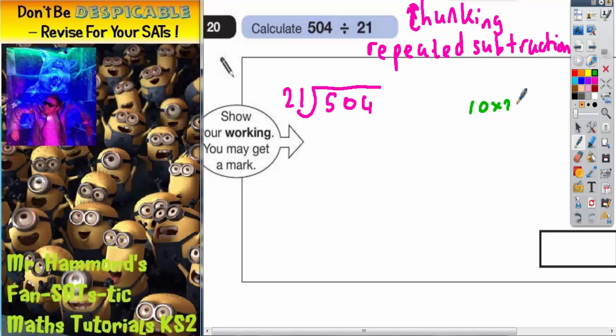Well, 10 21's would be easy, 210. 20 21's would even be quite easy as well. Because if we do 10 21's, 20 21's would just be double that. So 20 lots of 21 would be double 210, which would be 420.